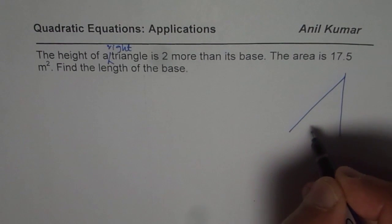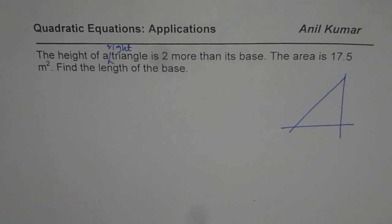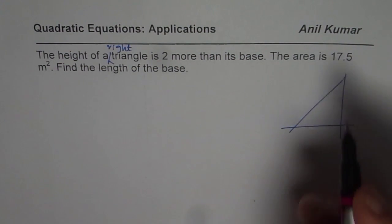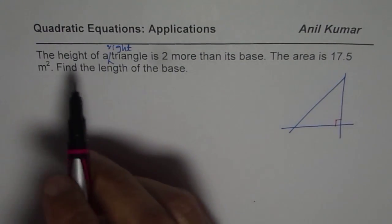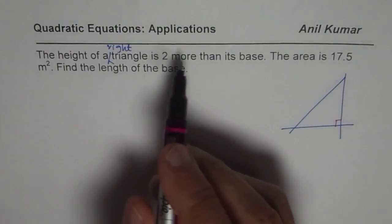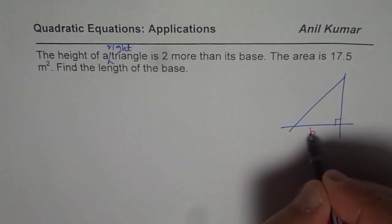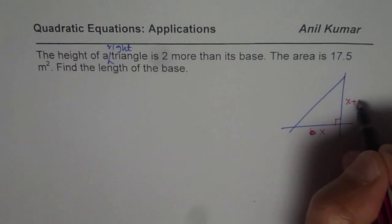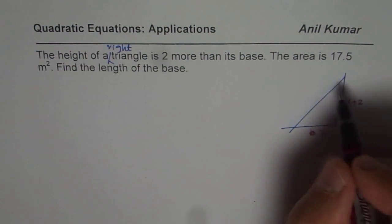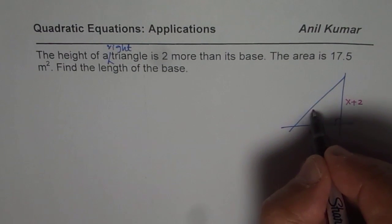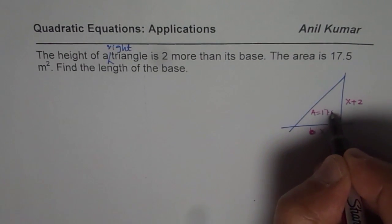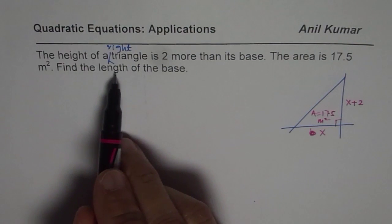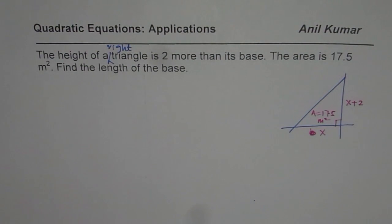Let me sketch one right triangle here. We are given the relation between the two sides. Height of the right triangle is two more than the base. Let's say base is x, and height is two more, so it is x plus 2. Area is given as 17.5 meter square. Find length of the base.